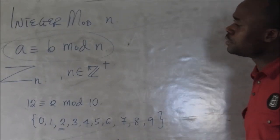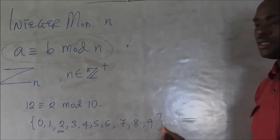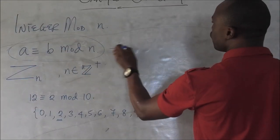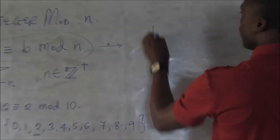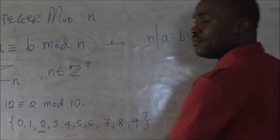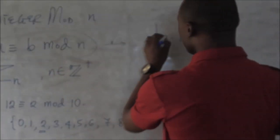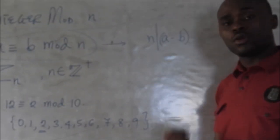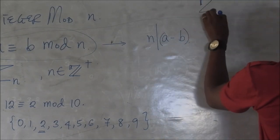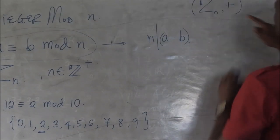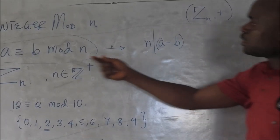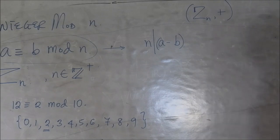The condition for this congruence to hold is that n must divide a minus b. Here, 12 minus 2 is 10, and 10 divides 10 — that is the condition. Z_n under addition is always a group; in most cases it is always an abelian group.